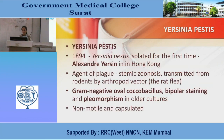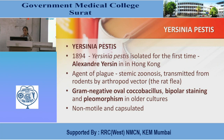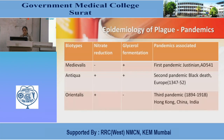Yersinia pestis was first isolated in 1894 by Alexandre Yersin in Hong Kong. It is the agent of plague. It is zoonotic and transmitted by rodents via an arthropod vector, the rat flea. It is a gram-negative oval coccobacillus, stains with bipolar staining, and shows pleomorphism in older cultures. It is non-motile and encapsulated.